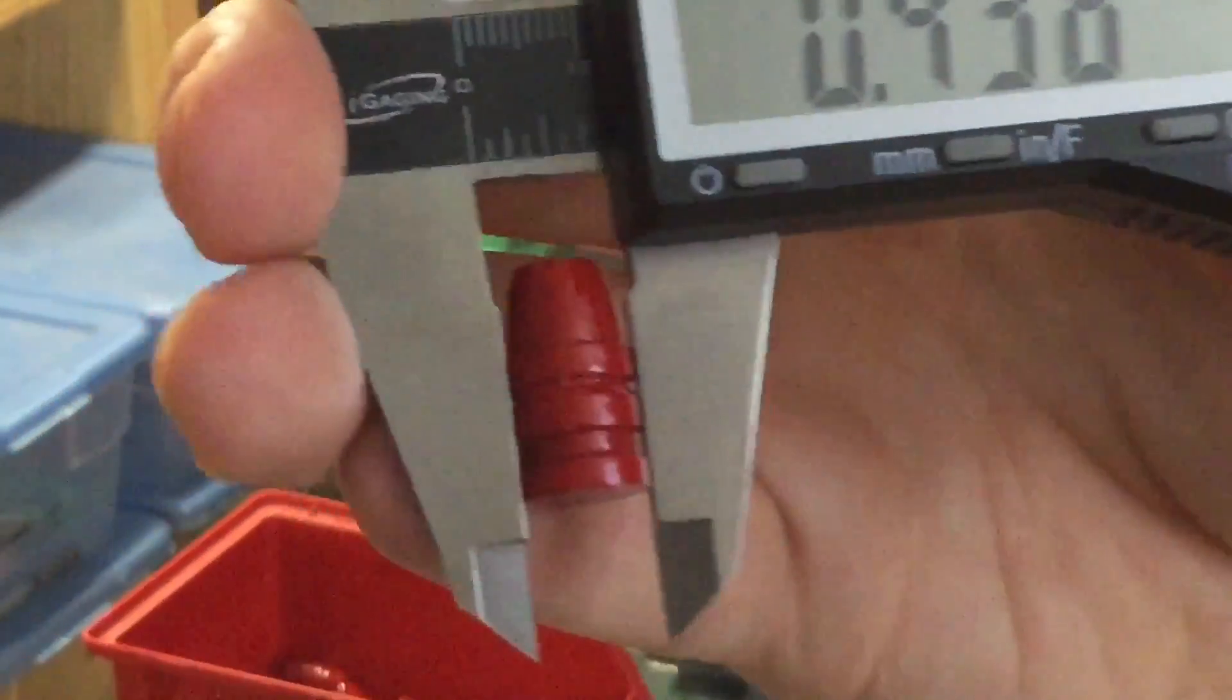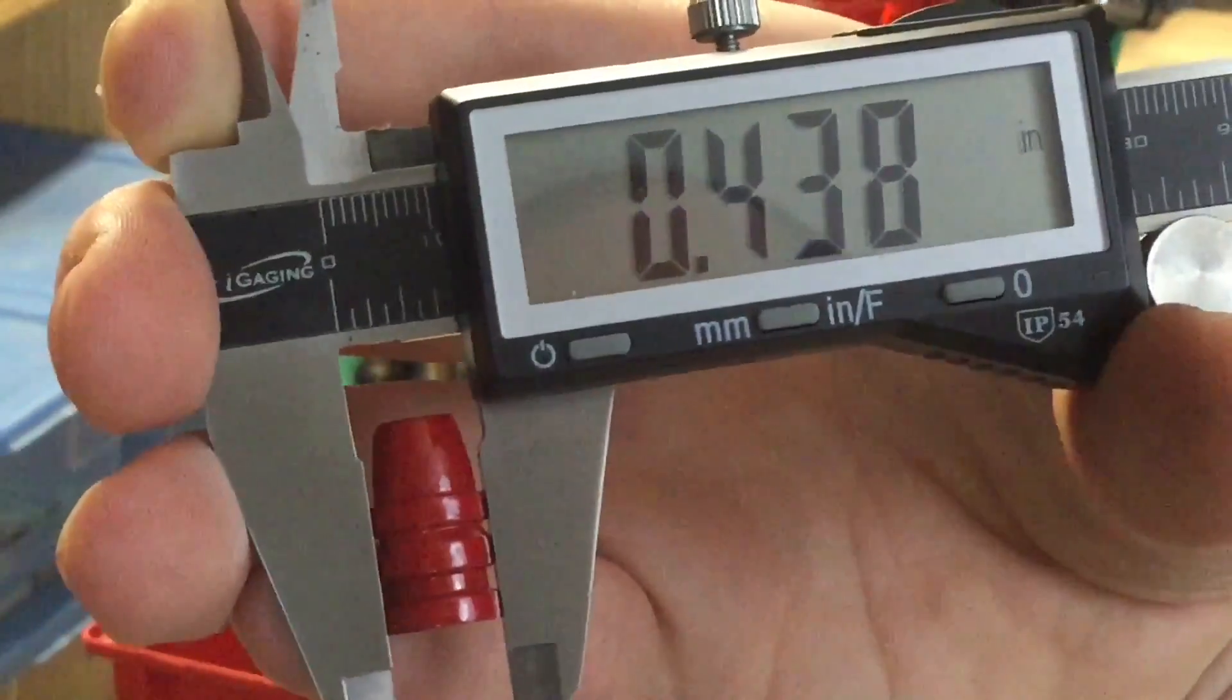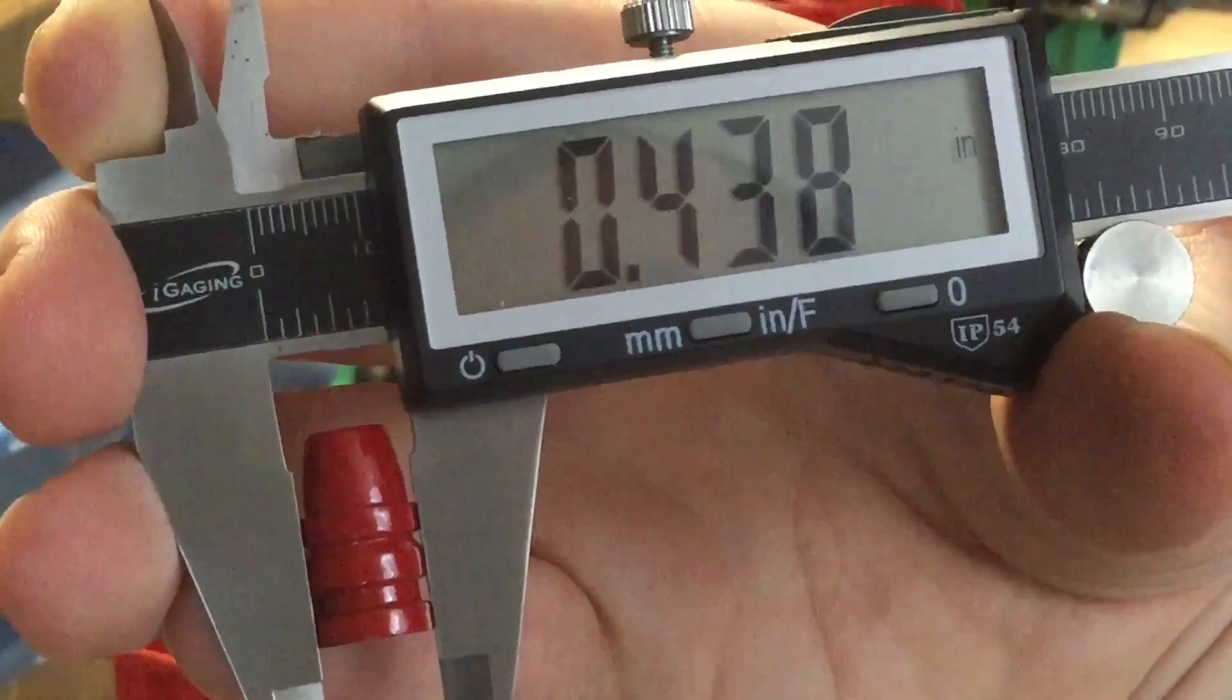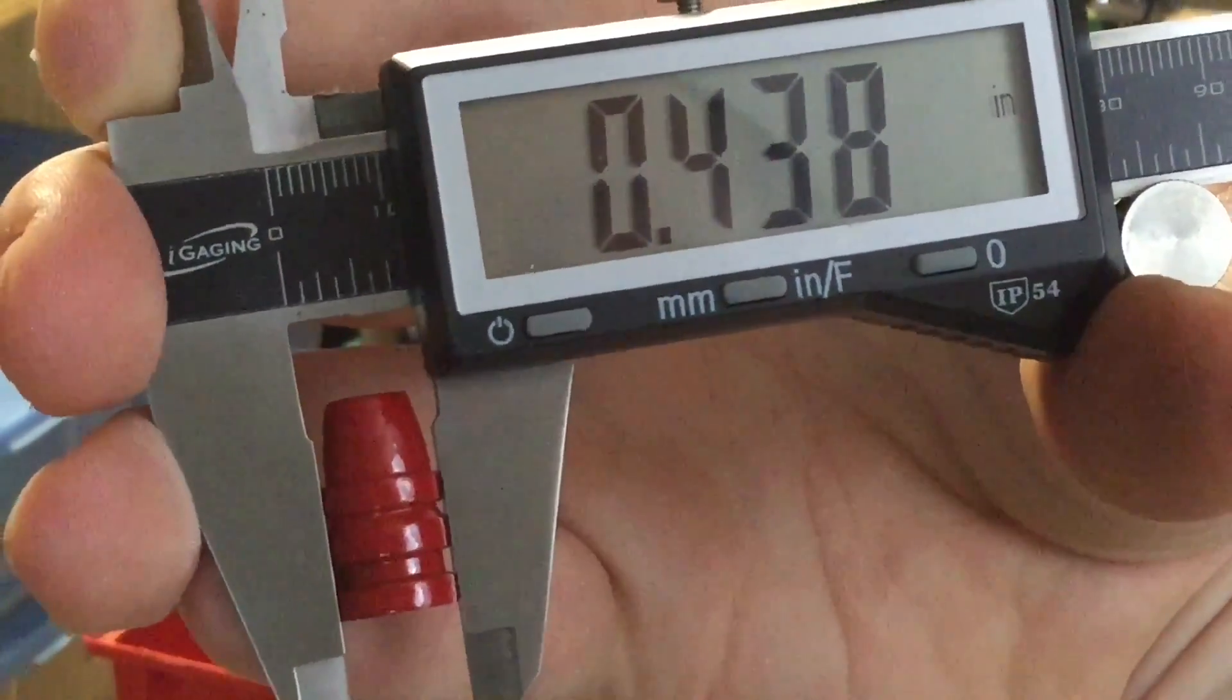You can see the portion of the bullet that the calipers are touching, the three driving bands there, and you can see that they currently are 0.438 inches. After we shove it through the sizing die, this measurement is going to read 0.430.